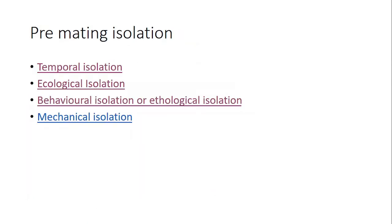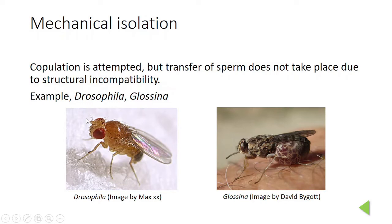The next pre-mating mechanism is mechanical isolation. In this case, copulation or mating is attempted but transfer of sperm does not take place due to structural incompatibility of the sex organs. This type of isolating mechanism can be observed in Drosophila and Glossina — Glossina, also known as the tsetse fly, a well-known vector for African sleeping sickness — where structural differences between the genitals prevent hybridization between individuals of different species.